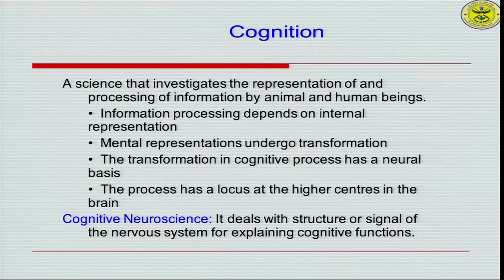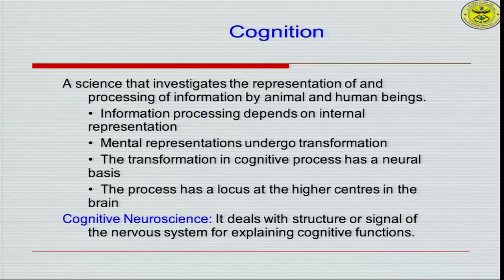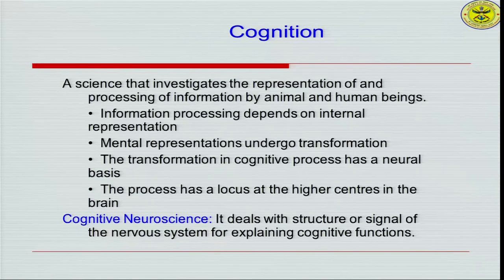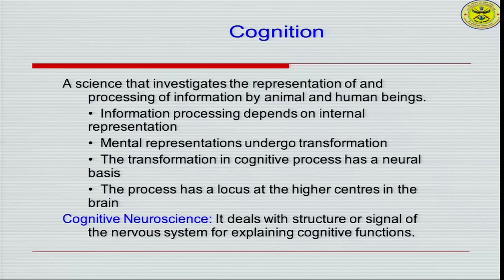Before we enter into cognitive neuroscience, it is important that we understand cognition. Cognition is basically a science that deals with how information is registered, how it is processed, and how it is retrieved. In a more formal term, it is a science that investigates the representation of and the processing of information by animals and human beings. Cognitive science has its roots in animal sciences and comparative psychology, and the representation and processing of information is its primary area.